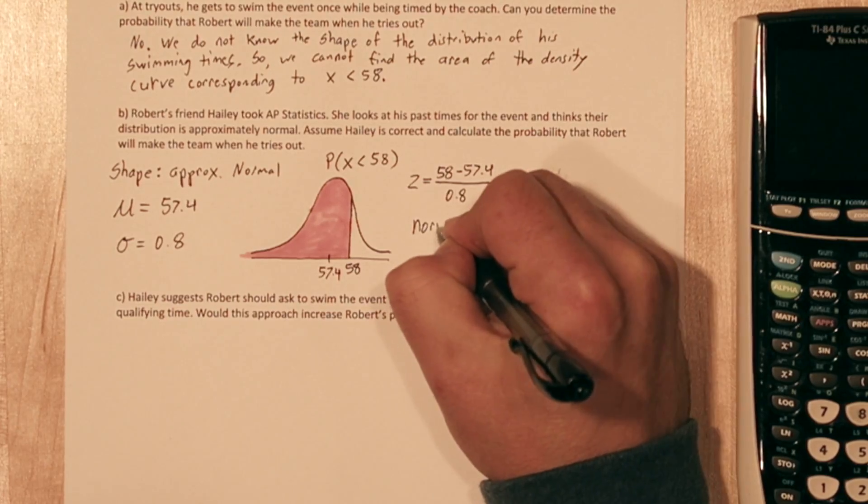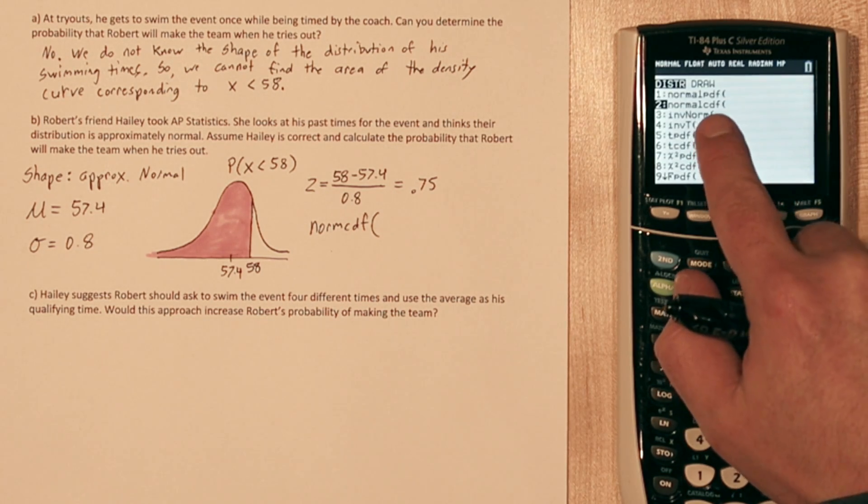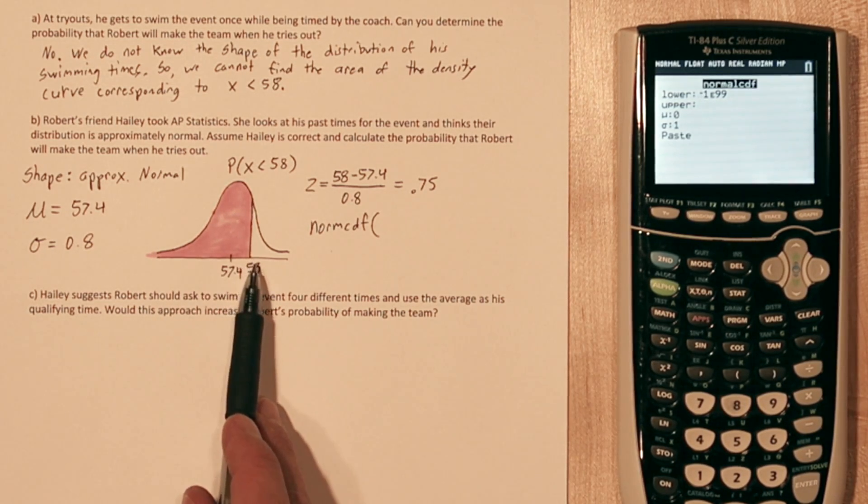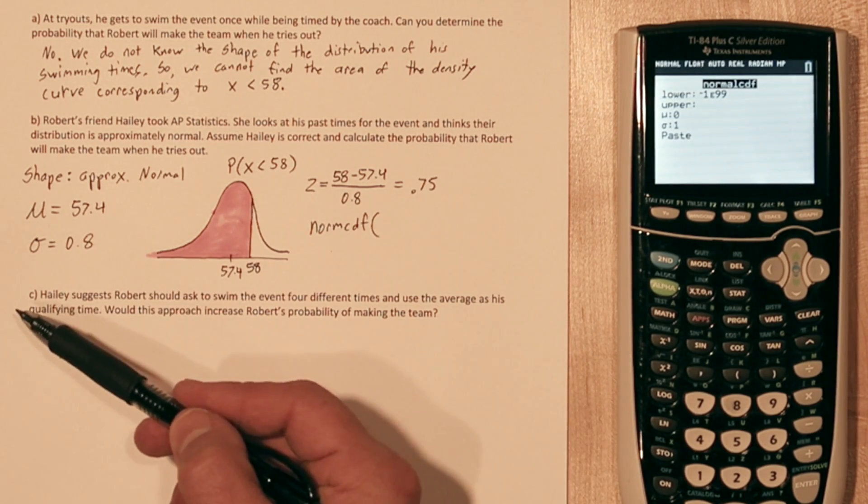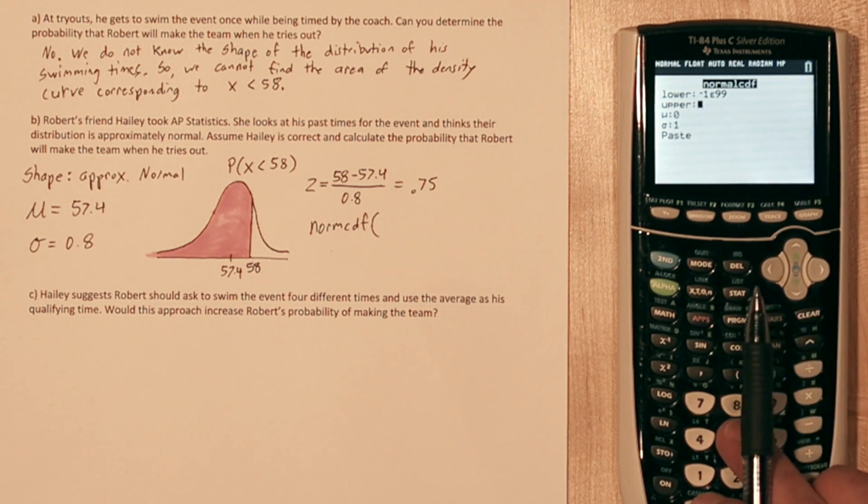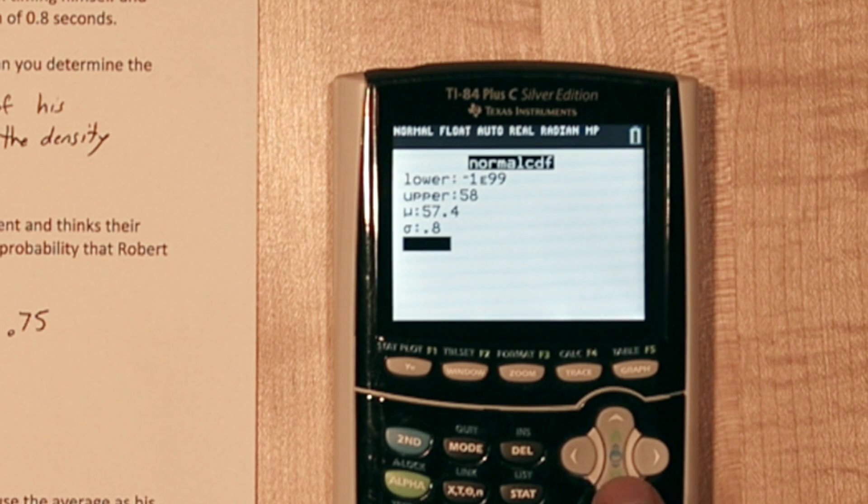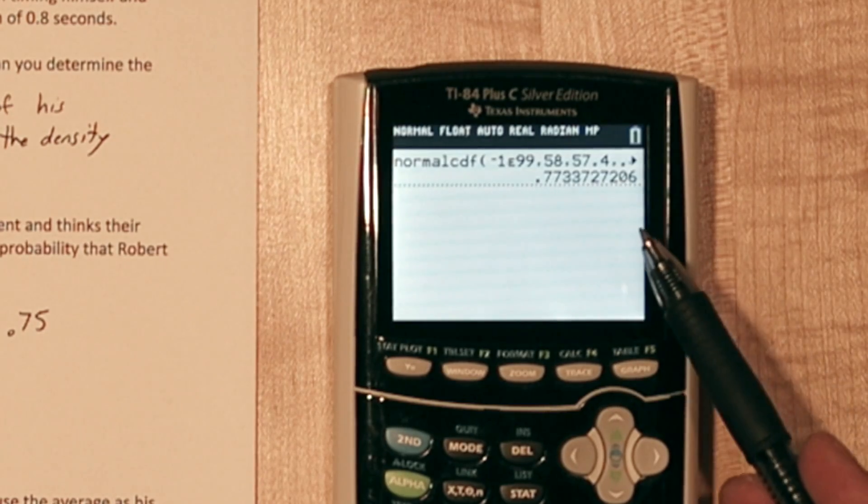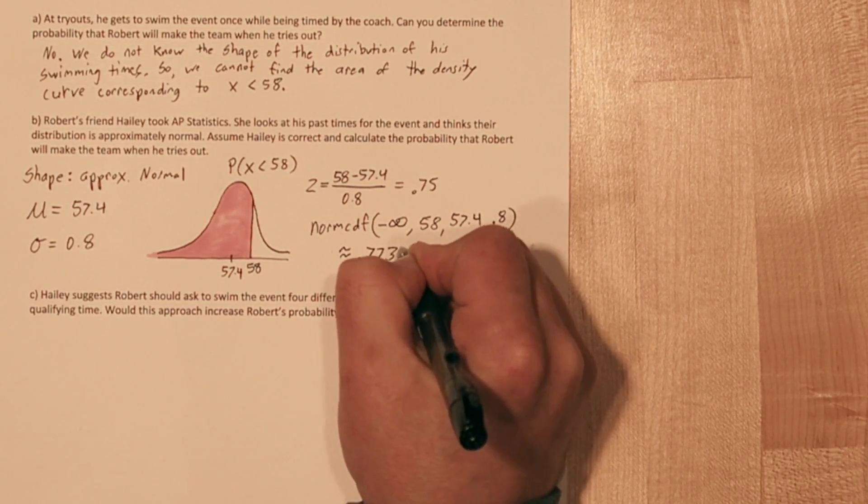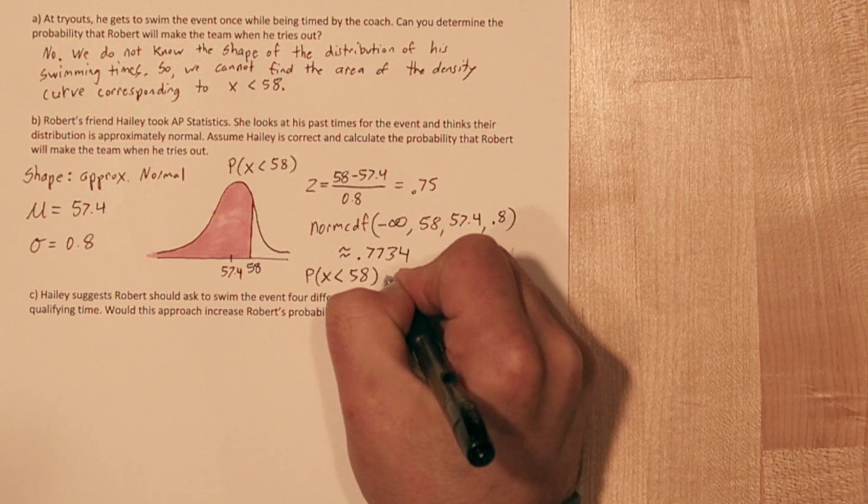To calculate this area, we can use the normcdf function. To get to normcdf on the calculator, press second, then vars. This is the distribution menu. When I go to normcdf and press enter, I get to input a lower limit, an upper limit, the mean, and the standard deviation. For lower limit, we're interested in all the times less than 58 seconds, so everything to the left of this 58, all the way into the negative infinity direction. And that's what it's set at right now, to negative infinity, so we'll leave that. Our upper cutoff is going to be 58. That corresponds to this line right here. Our mean is 57.4, and our standard deviation is 0.8. When I select paste, it pasted onto my screen, and when I press enter again, it gives us our area. That gave us an area of about 0.7734. So this is the probability we want. The probability Robert gets a time of less than 58 seconds is about 0.7734.